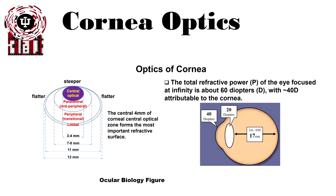Let's review the corneal optics quickly. The optics of the cornea provides about two-thirds, or about 40 diopters, of the total power of the eye. The lens provides the other part, about 20 diopters, or about one-third of the power.